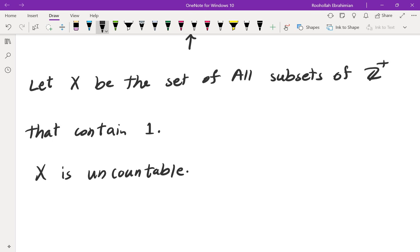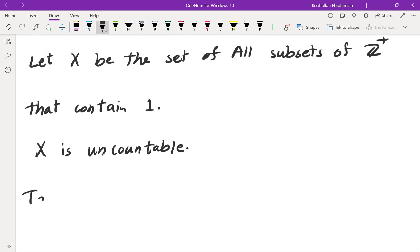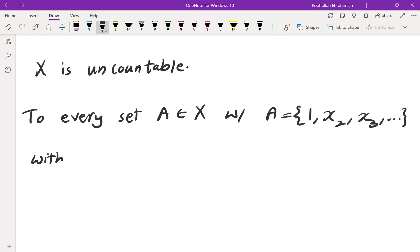Now, for every one of these sets in X, I'm going to create another subset of Z plus. How do I do that? To every set A in X with A equals - so the first element is always one, then the next element is maybe X2, X3, and so on - with one less than X1, less than X2, less than etc. We assign a 0,1 sequence.